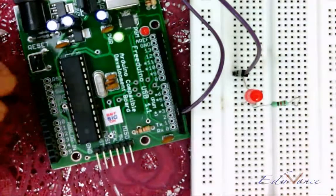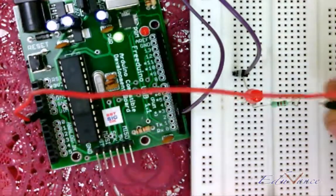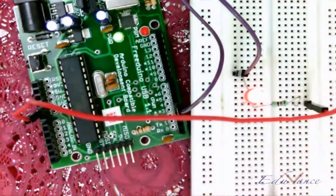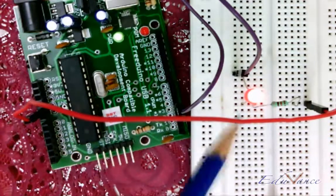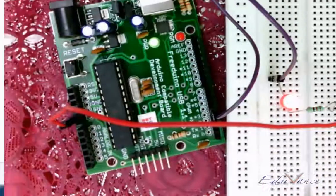So the next terminal that we have to connect is the ground terminal to the cathode. Now, the LED is just glowing, this is not blinking, so we have to go to the program.